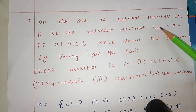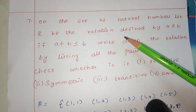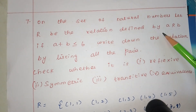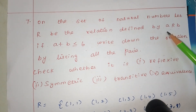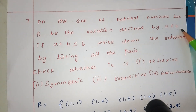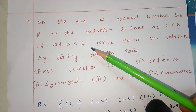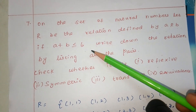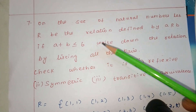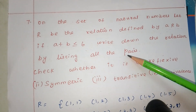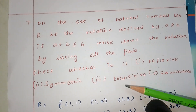On a set of natural numbers, let R be the relation defined by A is related to B if A plus B is less than or equal to 6. Write down the relation by listing all the pairs.